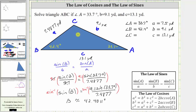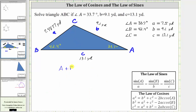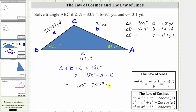Now to find the measure of angle C, we use the fact that the sum of the interior angles of any triangle equals 180 degrees. Angle A plus angle B plus angle C equals 180 degrees, so angle C equals 180 degrees minus 33.7 degrees minus 42.4 degrees, which gives us angle C is approximately 103.9 degrees.